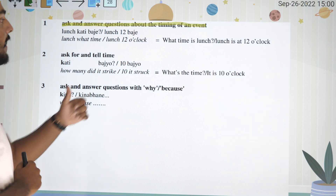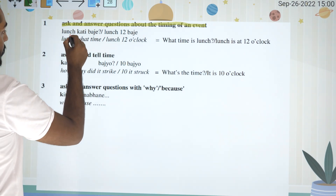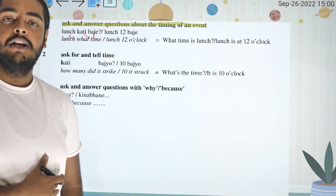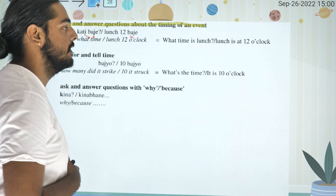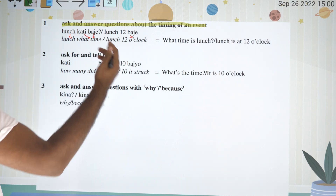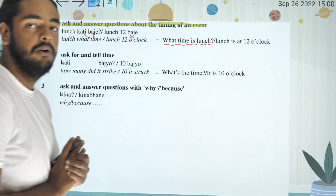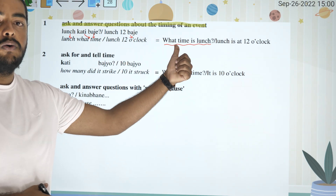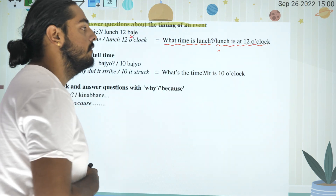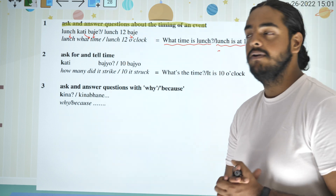When is lunch? What time is lunch? Lunch is at 12 o'clock. Lunch is at 12 o'clock. Now here is an important rule: there is an exact time.